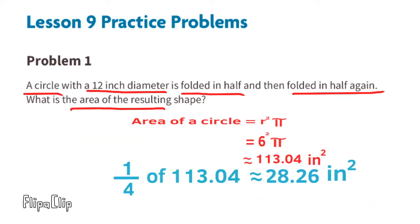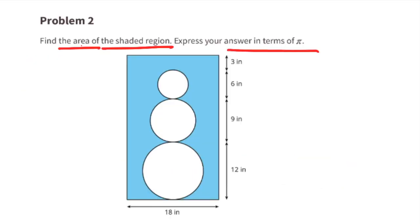The circle was folded in half and then folded in half again, which is equivalent to one-fourth of the original area. One-fourth of 113.04 equals approximately 28.26 inches squared. The area of the resulting shape would be approximately 28.26 inches squared.